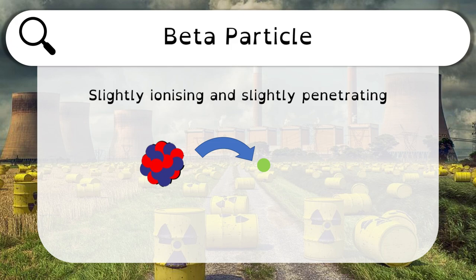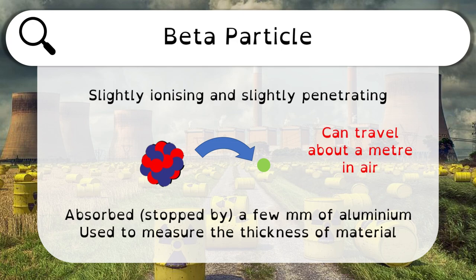Looking at the size of the numbers — ignoring positive and negative — it's half the size of alpha's charge. So beta is in the middle: it's slightly ionising and slightly penetrating. Because it's more penetrating, it can travel further — about a metre in air — and it's absorbed or stopped by a few millimetres of aluminium. We can also use it to measure the thicknesses of different materials.